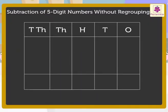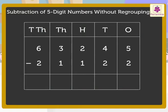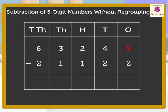Write the numbers 63,245 and 21,122 in the place value chart — that is, in the ones, tens, hundreds, thousands, and ten-thousands column. First, we subtract the numbers in the ones column. That is, 2 from 5. We get the number 3. Write it also in the ones column.